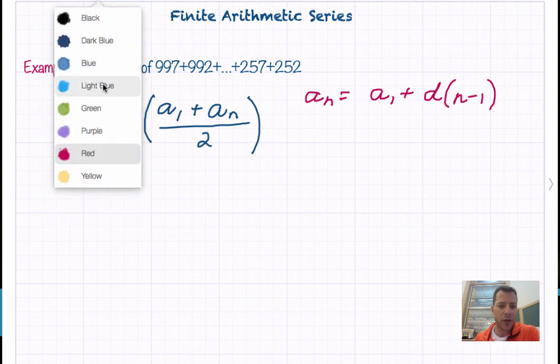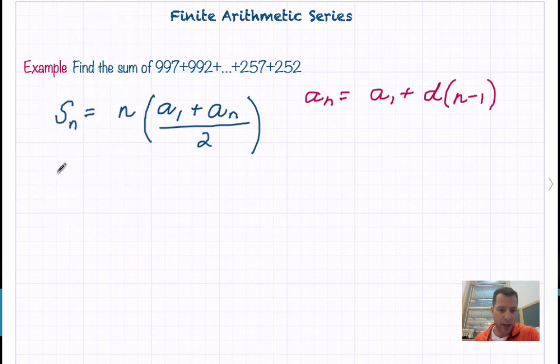So what we have to do is look at what we're given. We know that the first term A sub 1 is equal to 997, and we know that A sub n is equal to that last term, which is 252.